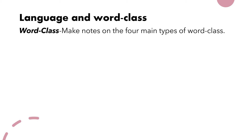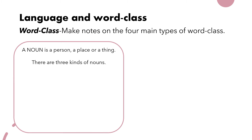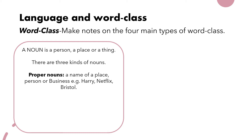Now we're going to look at nouns, which are extremely important. Essentially, a noun is a person, a place, or a thing. When we get more technical, there are three more specific types. The first is a proper noun — arguably the one you're most aware of — which is the name of a place, person, or business. For example, Harry is a name, Netflix is the name of a business, and Bristol is the name of a location.